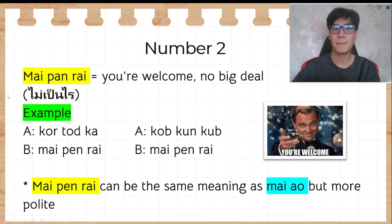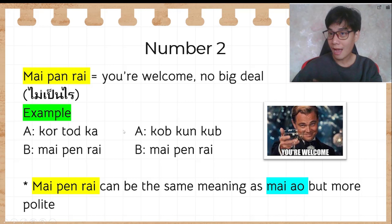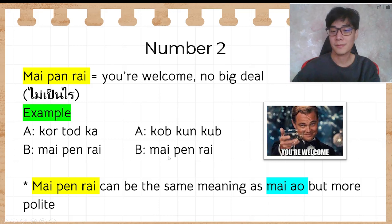Number 2: ไม่เป็นไร. Many students know this as 'you're welcome,' but I usually teach it as 'not a big deal.' For example, if someone says ขอโทษคะ, you can reply ไม่เป็นไร, and if someone says ขอบคุณครับ, you can also reply ไม่เป็นไร. So ไม่เป็นไร can mean both 'no worries' and 'you're welcome' — it's a polite way to respond.